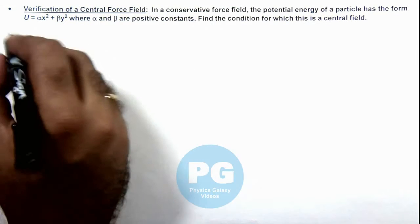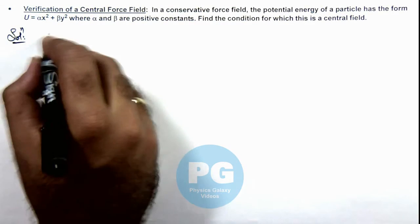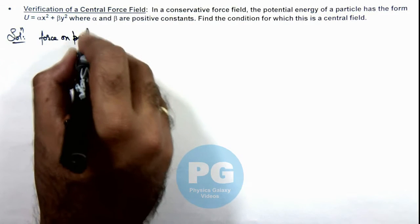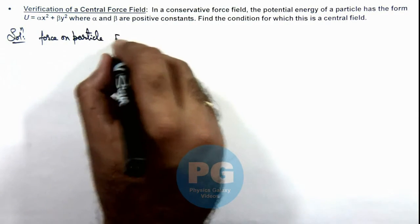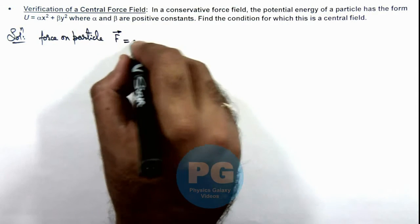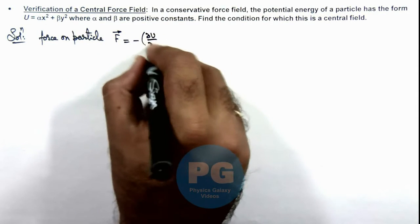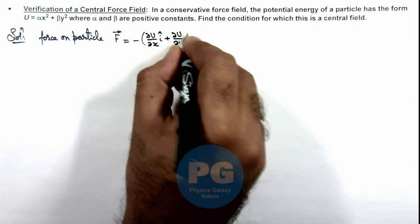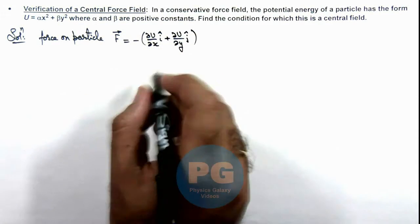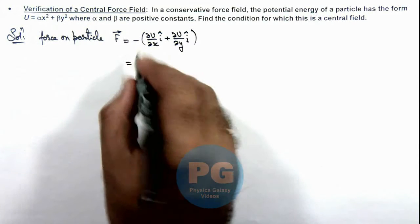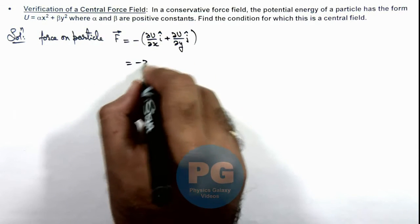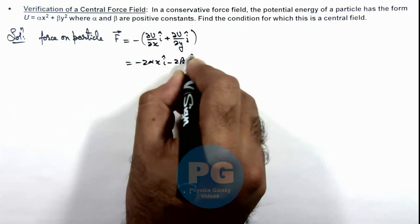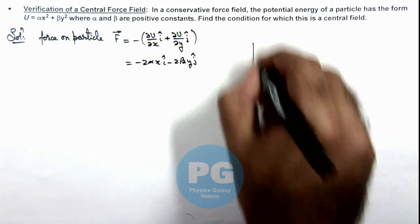If we find the force on the particle, the force vector can be given as F = -(∂U/∂x î + ∂U/∂y ĵ). Using the values, this gives us F = -2αx î - 2βy ĵ.